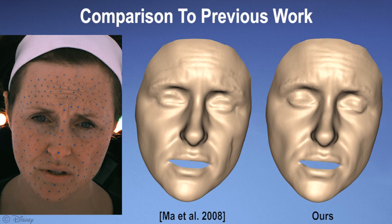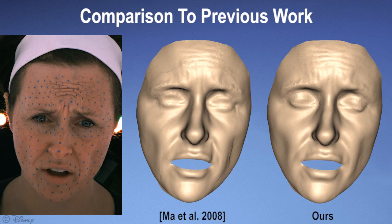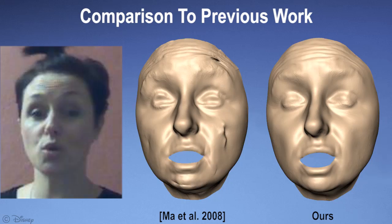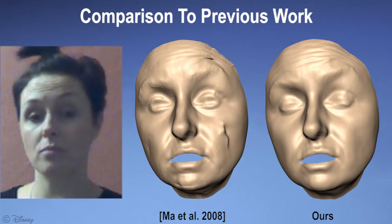We compare our spatial enhancement approach to the polynomial displacement map technique of Ma and colleagues, first on the motion capture input sequence. Since polynomials don't extrapolate well, their approach has problems with input that is far away from the training set, causing artifacts on the cheek and forehead. These artifacts are further exaggerated on the Kinect input, which is even further outside the database.